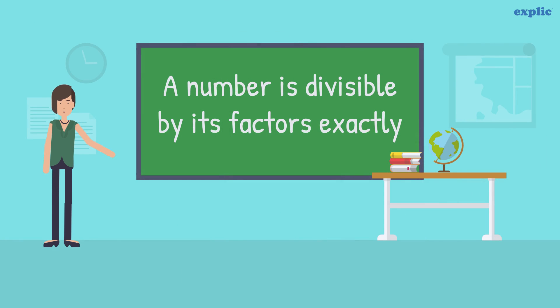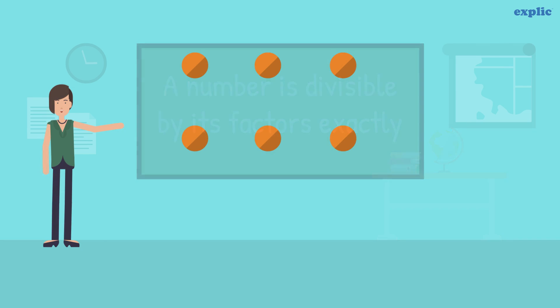Factors of a number can also be understood as the number that divides the numbers without leaving a remainder. Factors of the number can divide the number into equal parts. For example, 6 can be divided into 2 or 3 equal parts. Therefore, 2 and 3 are the factors of 6.